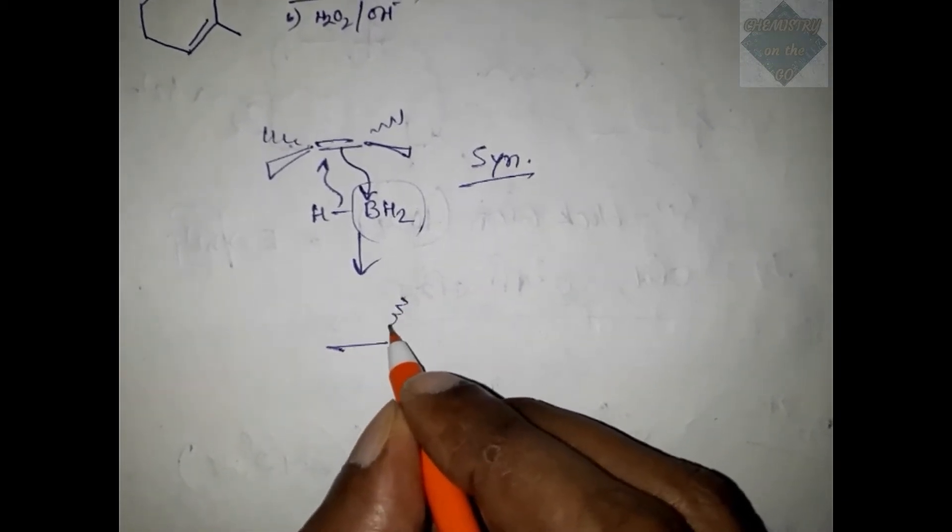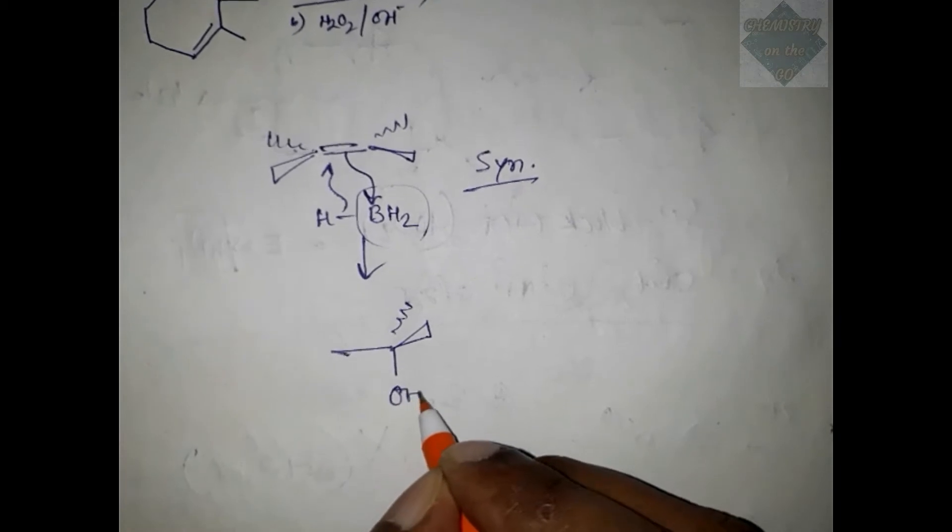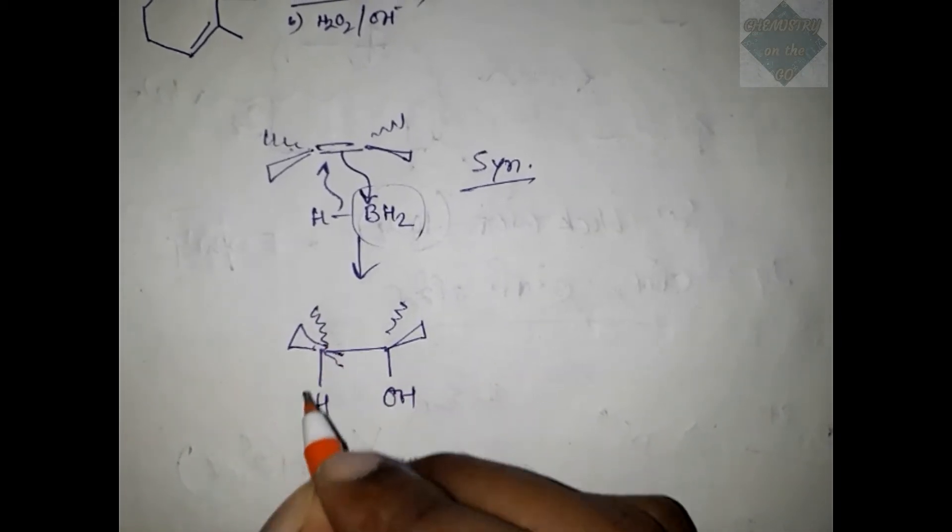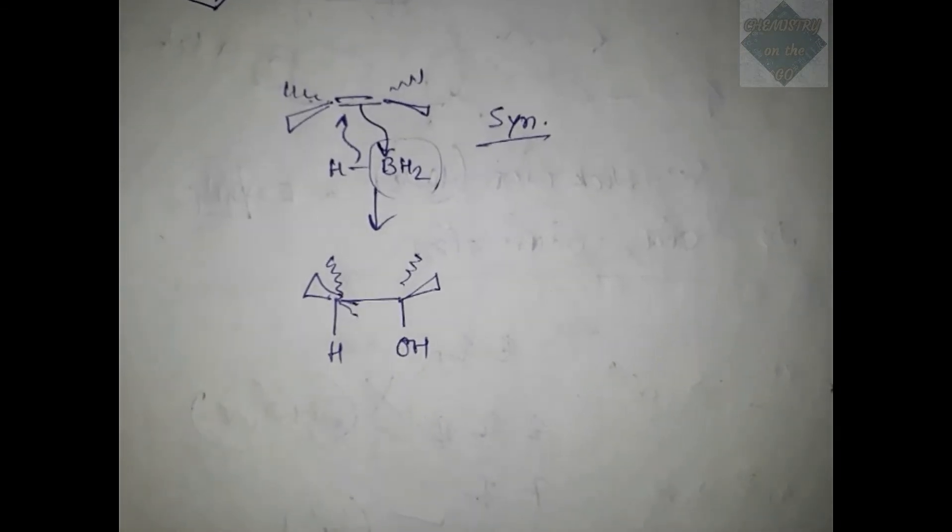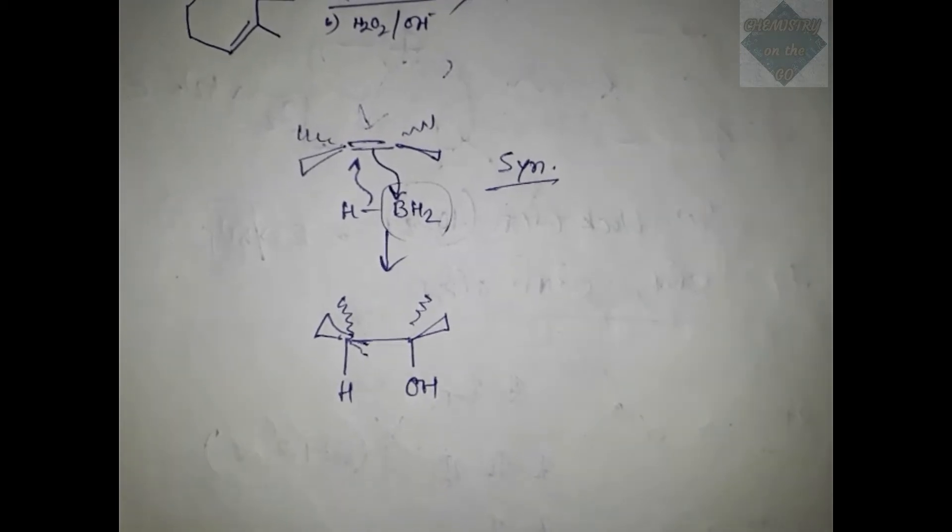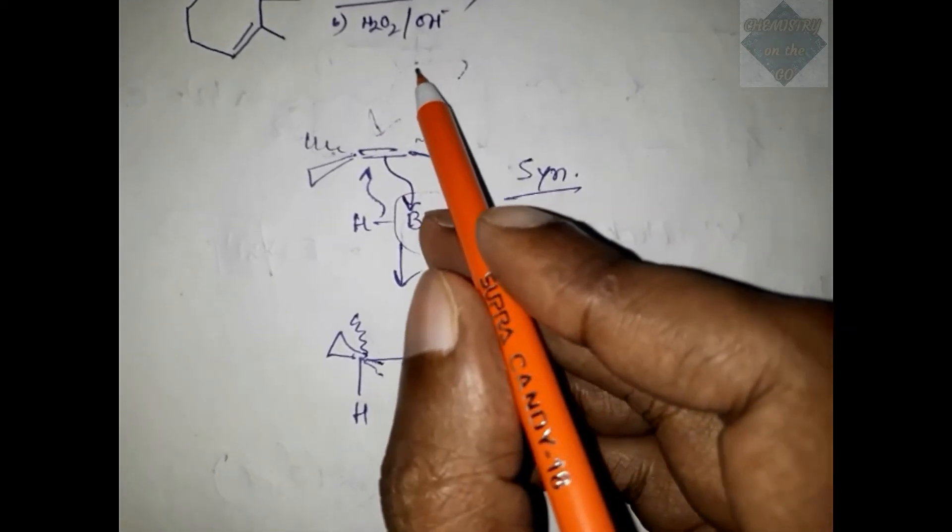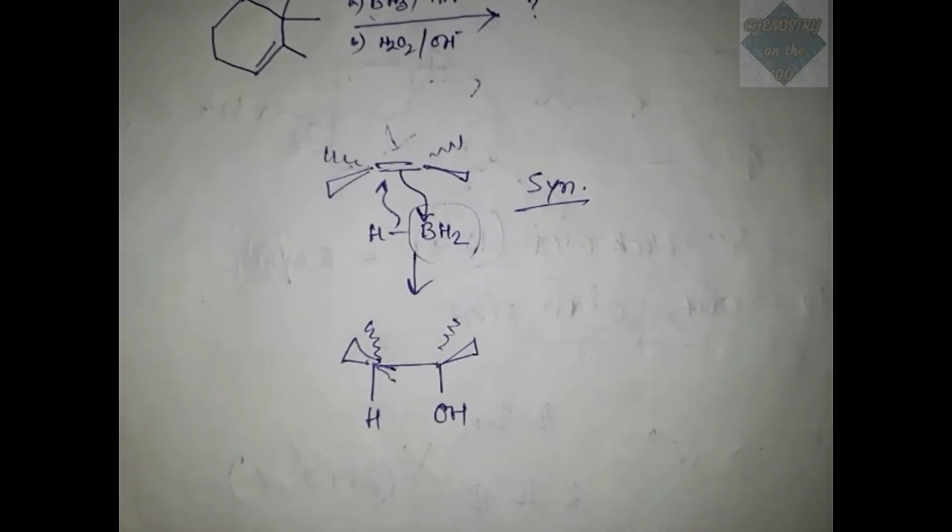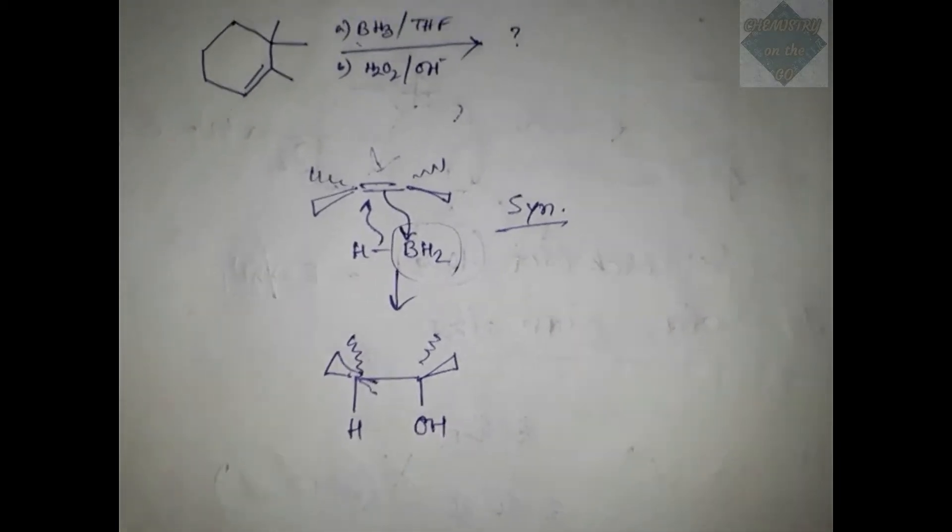The OH and H both will be added from the same side. It can also be added from this side, so whatever side it's getting added, it will always be a syn addition. The H and BH2 will add from the same side.